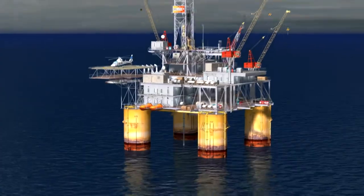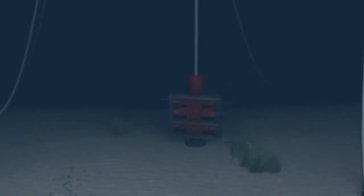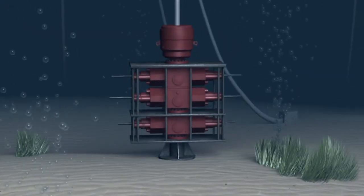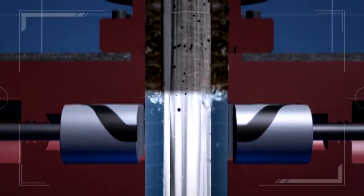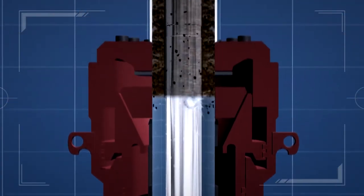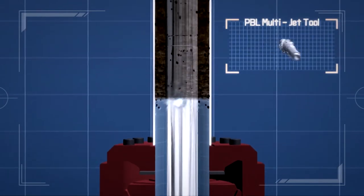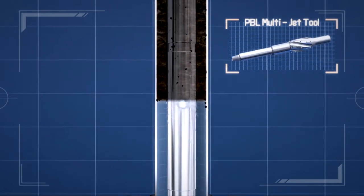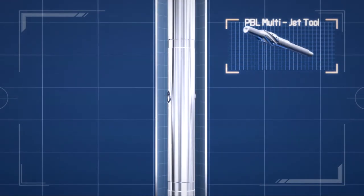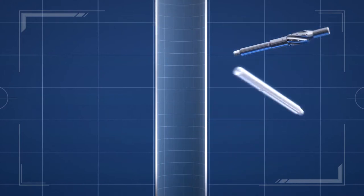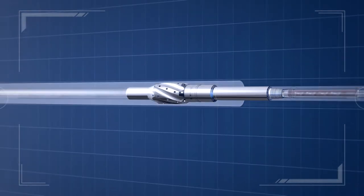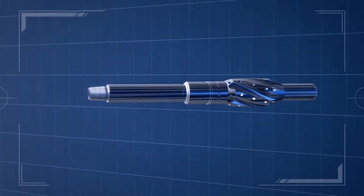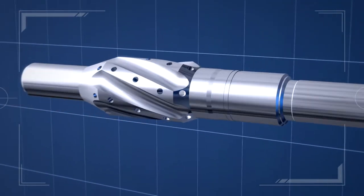Further applications are blowout preventer stack clean-out operations or to drain the drill string. If a blowout preventer stack clean-out is required without rotating the entire drill string, the PBL multi-jet tool is the right solution. 30-jet nozzles are available for a proper cleaning process.